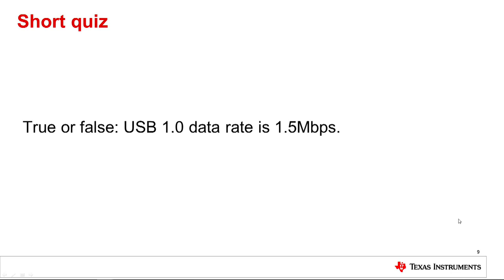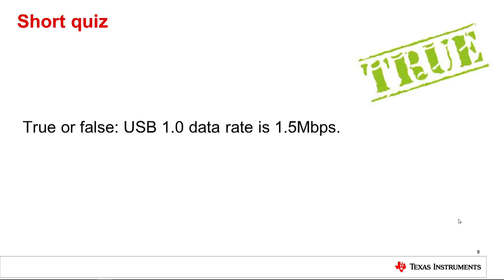To recap what we discussed, let's go over a short quiz. Number one, true or false: USB 1.0 data rate is 1.5 megabits per second. The answer is true — the USB 1.0 data rate is 1.5 megabits per second.